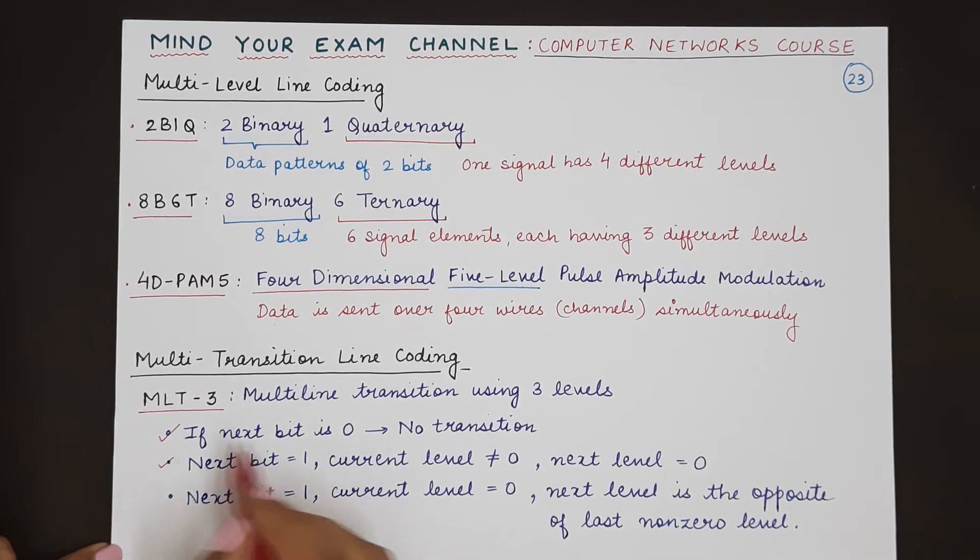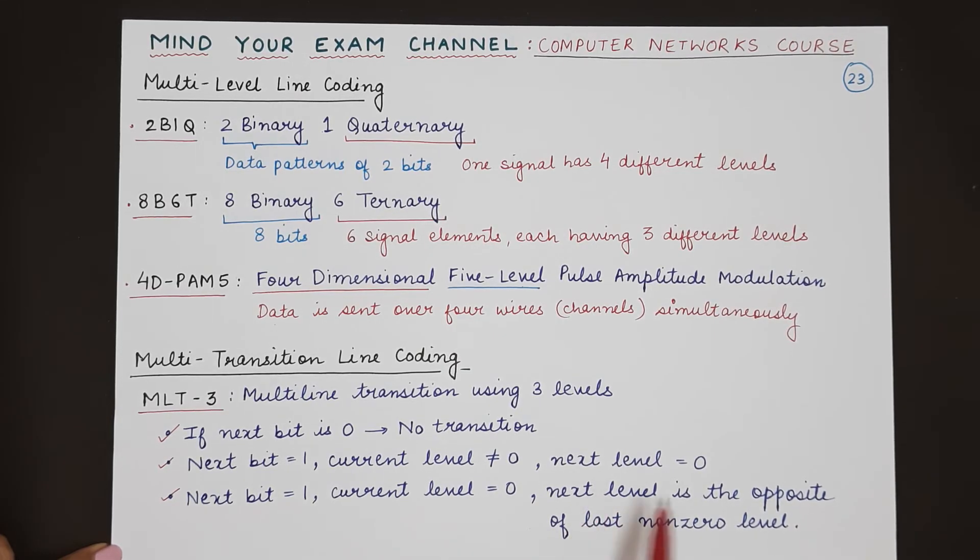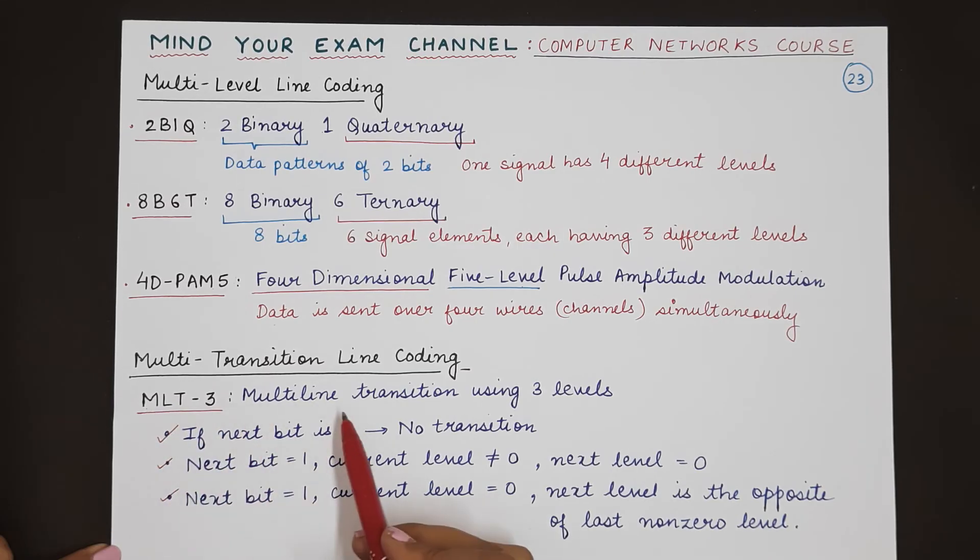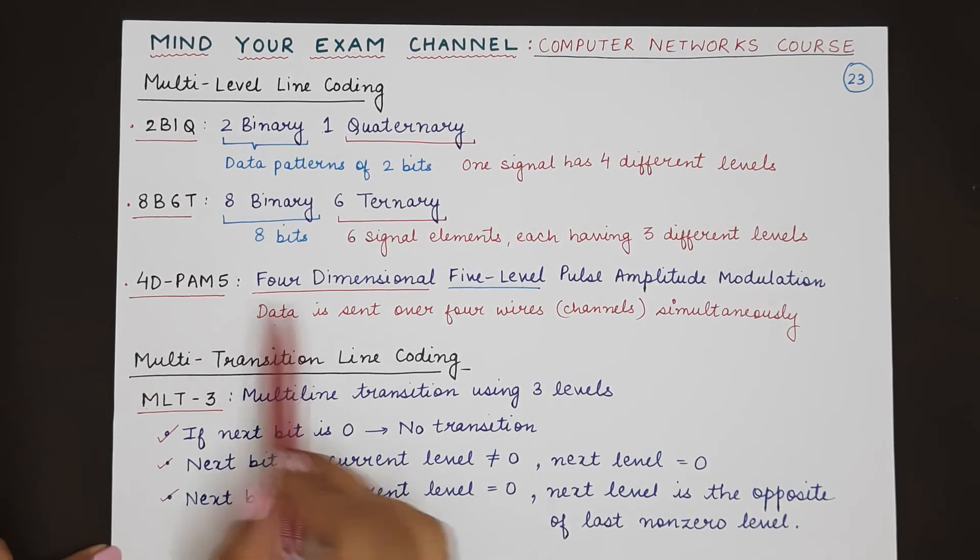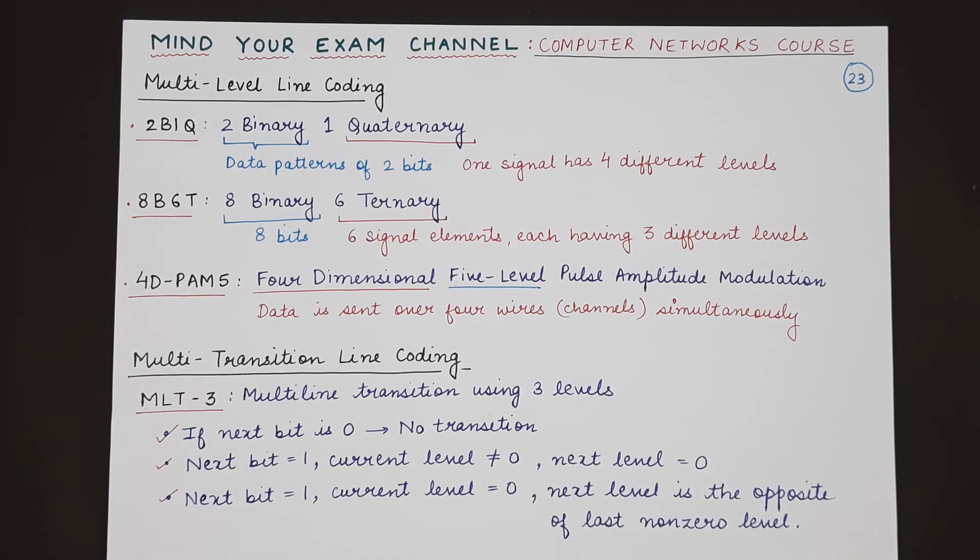If the next bit is not zero, and the current level is not zero voltage, the next level will be zero voltage. Otherwise, if the next bit is one and the current level is zero voltage, then the next level will be the opposite of the previous non-zero level. These are the three rules that you need to remember for multi-line transition using three levels, which is a part of multi-transition line coding scheme.